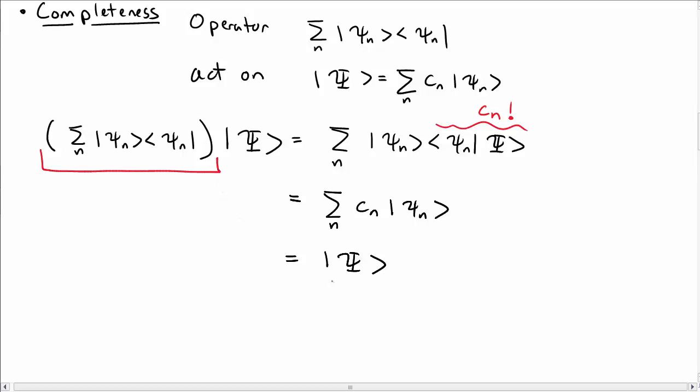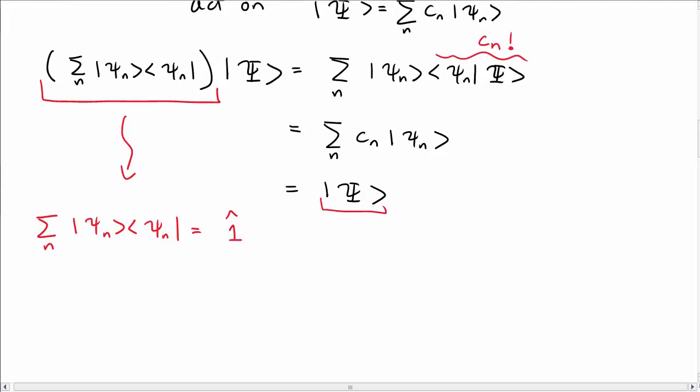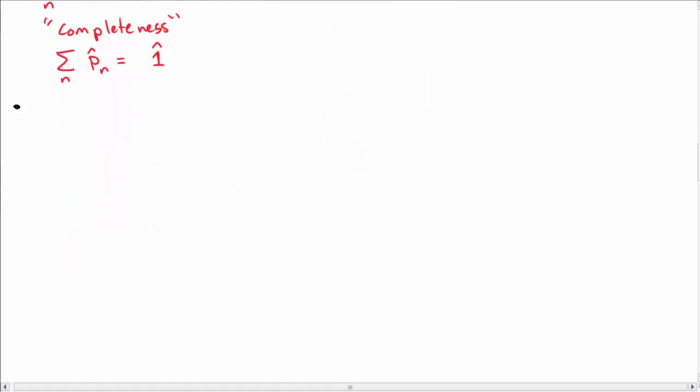So I operated on my state and I got back the same state. So this is a really special operator in particular. If I take the sum over the outer product of psi n, psi n, I get back identity. And so I call this the identity operator, the one operator. I just get back the original state that I started with. This statement here is called completeness, and you could write it as the sum over the projection operators, over all of the projection operators for your stationary states.